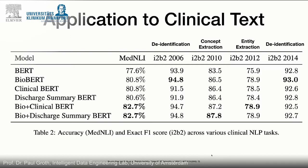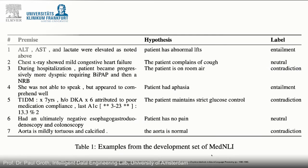I'll give you an example of one of these kinds of tasks. This medical natural language inference task is: given some sort of premise — 'ALT, AST, and lactate were elevated as noted above' — you have a hypothesis: 'the patient has abnormal LFTs.' Then you have a label. You can ask: does one follow from the other? Is there an entailment? Is there a contradiction? Or is it neutral? The machine is given these two phrases — the premise and the hypothesis — and is able to determine the connection between them.